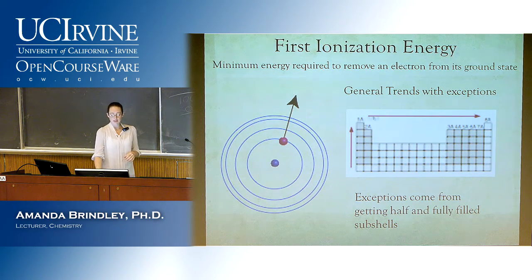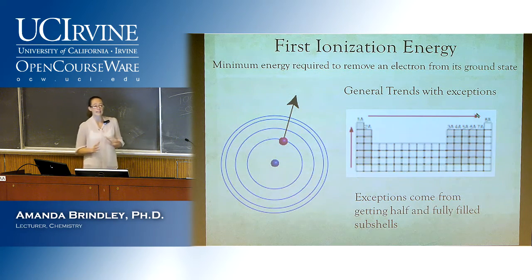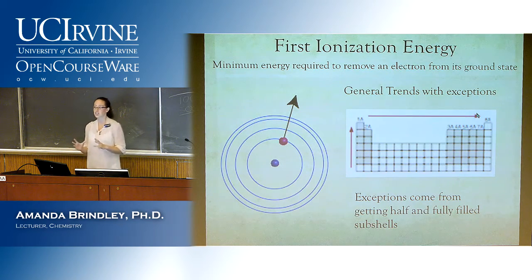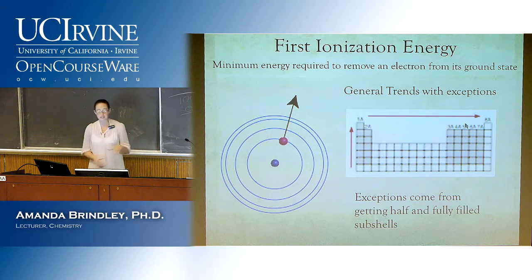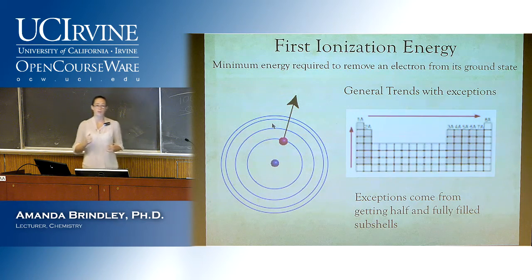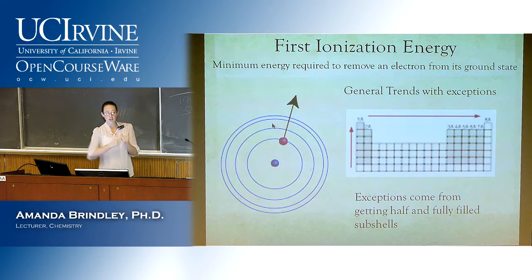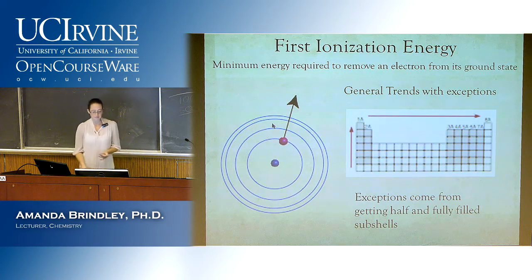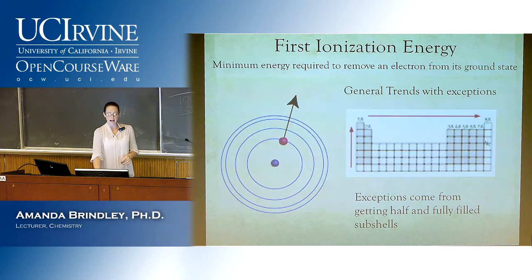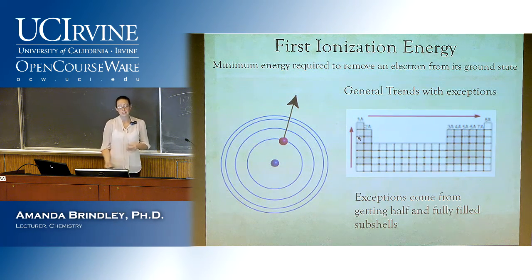Effective nuclear charge is the reasoning behind most of the other trends, and ionization energy is no exception. As you go across the periodic table, effective nuclear charge increases — like adding more strength to the nuclear magnet without adding another shell, so electrons are the same distance away but pulled harder. If effective nuclear charge increases from left to right, electrons are held tighter, and you need more energy to pull one off. Think of pulling apart two magnets: the stronger the magnet, the harder it is to separate.